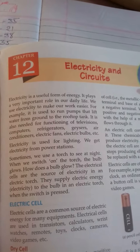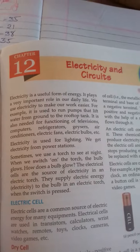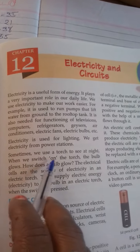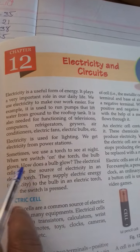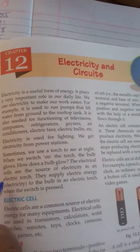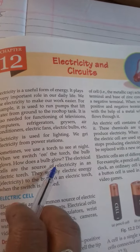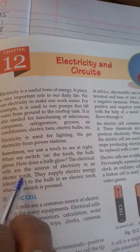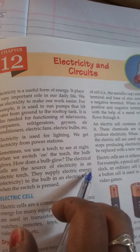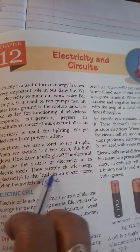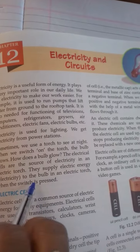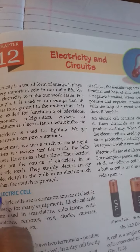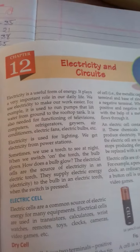We use a torch to see at night. When we switch on the torch, the bulb glows. How does a bulb glow? The electrical cells are the source of electricity in an electric torch. They supply electric energy to the bulb in an electric torch when the switch is pressed.